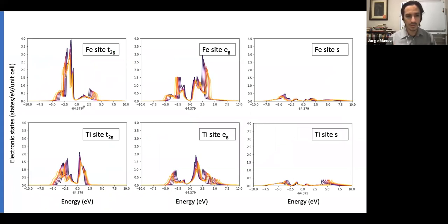We looked at the electronic density of states on the iron side and titanium side, both with T2G and EG electrons, and also the S electrons. The main changes are in this region around negative 2 to around negative 3. We integrated these curves to get the charge at the iron and titanium sides, the charge in the T2G and EG orbitals.